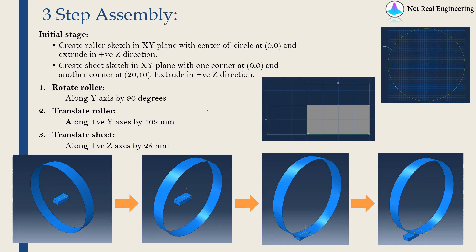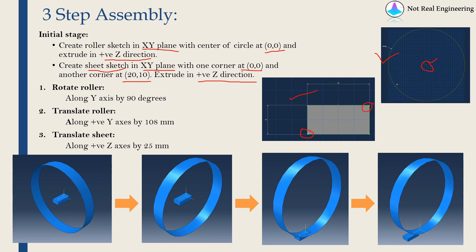One of the main challenges in rolling simulation is assembling the roller and sheet correctly. If you model the parts correctly, assembly becomes very easy. The approach is: sketch the roller in the XY plane with its center at (0,0) and extrude in the positive Z direction. For the sheet, sketch it in the XY plane with one corner at (0,0) and the other at (20,10), then extrude in the positive Z direction.